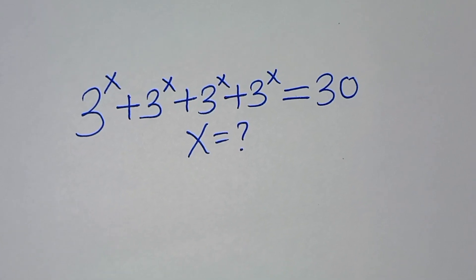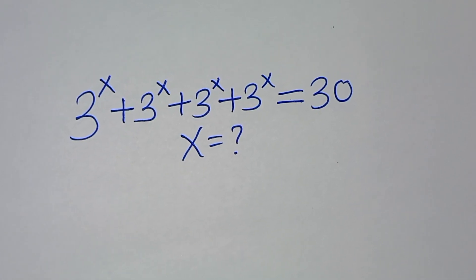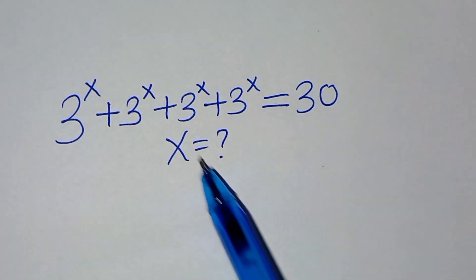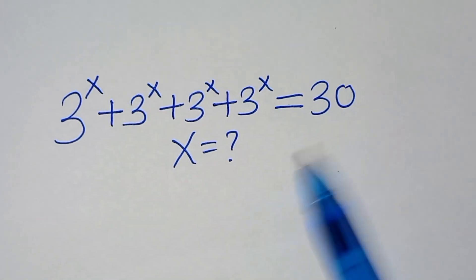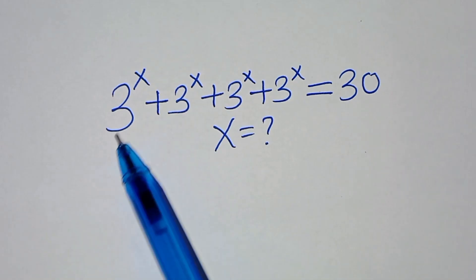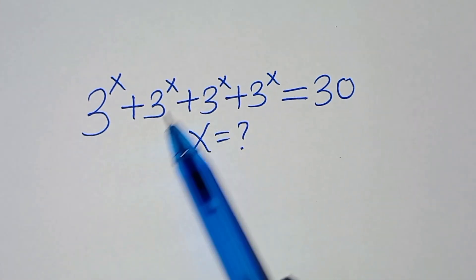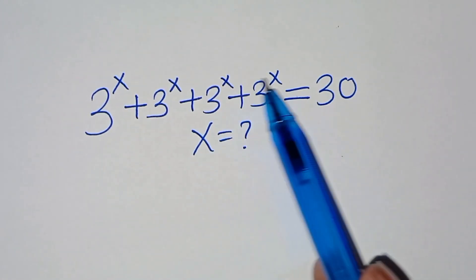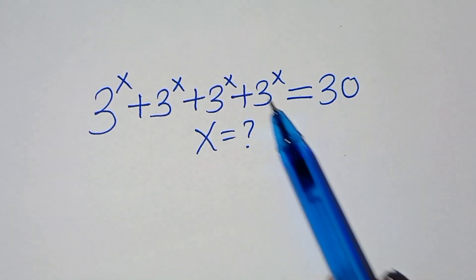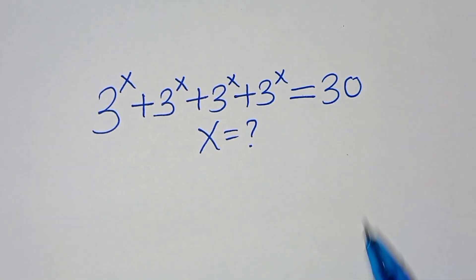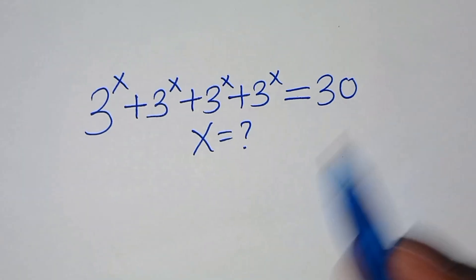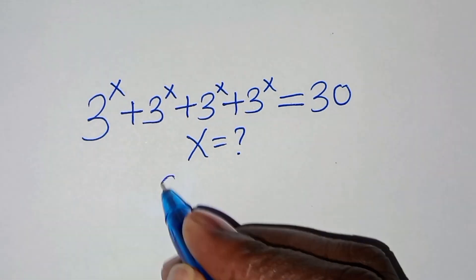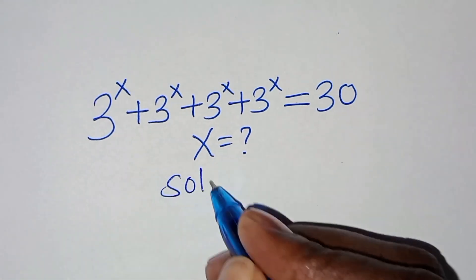Hello everyone, you are welcome to solve this nice exponential equation, which is 3 to the power x plus 3 to the power x plus 3 to the power x plus 3 to the power x is equal to 30. So what is the value of x?